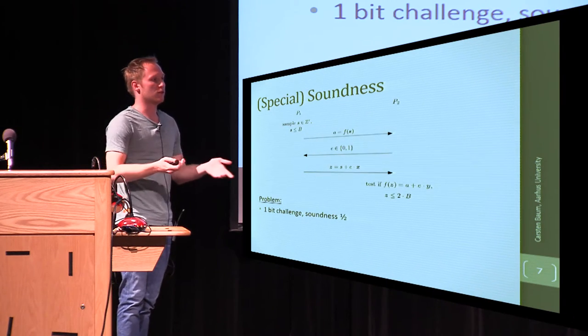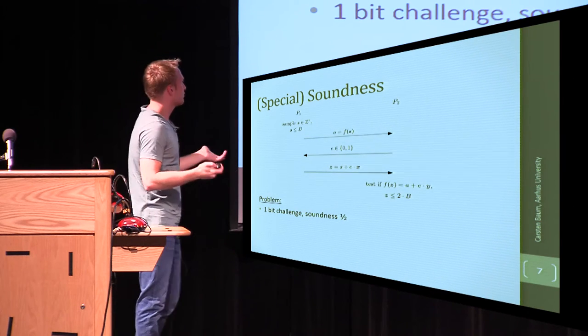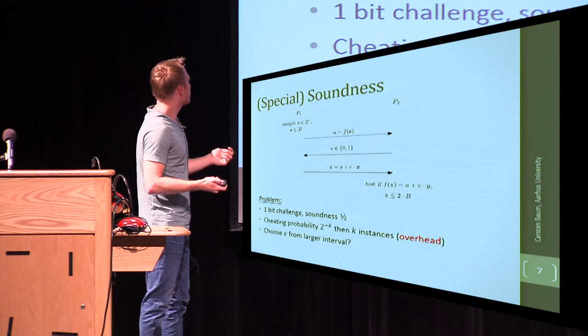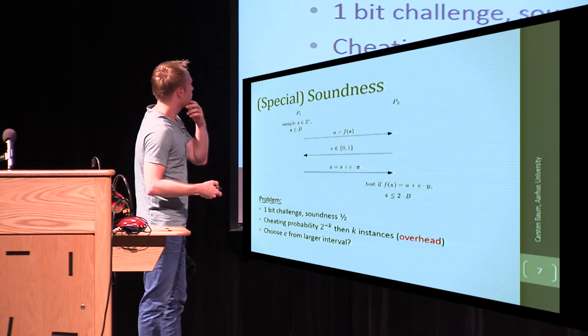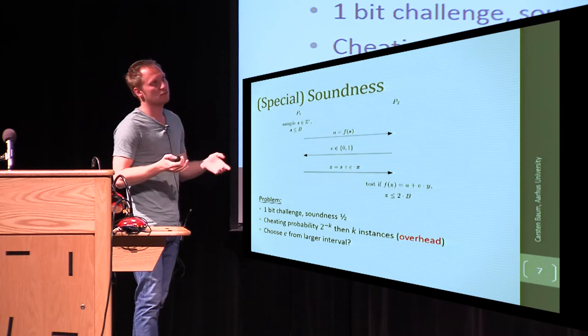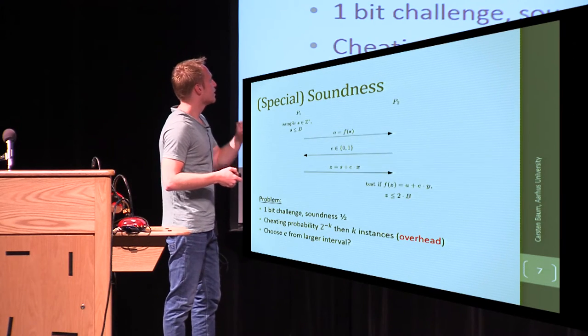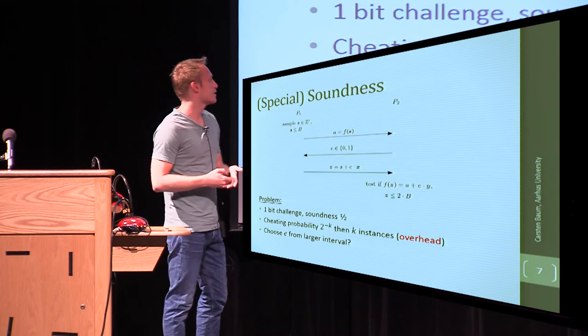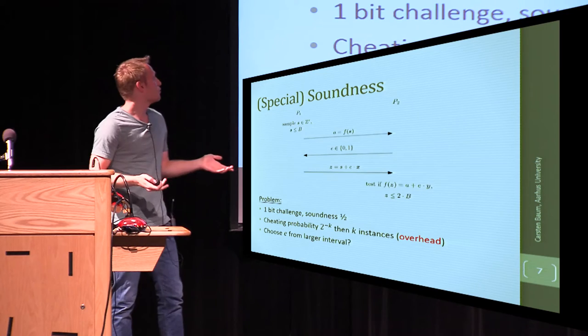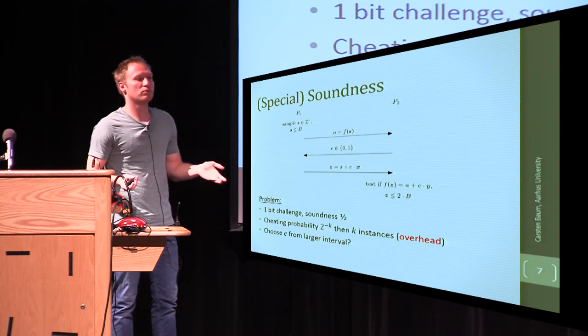And as you know, sigma protocol, if you do it this way, only gives you soundness one-half, basically, because you only have one bit challenge. So if you want to have security against the cheating prover with probability 2 to the minus K, then you have to repeat this thing K times. So you have to generate K of these auxiliary values, which we call the overhead.